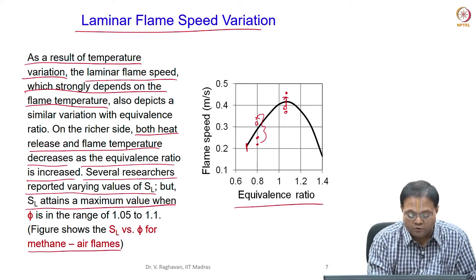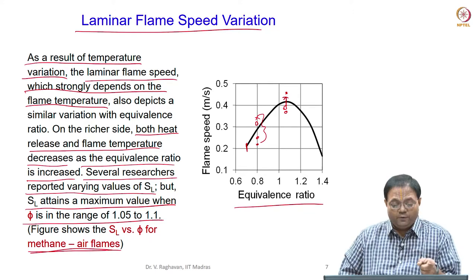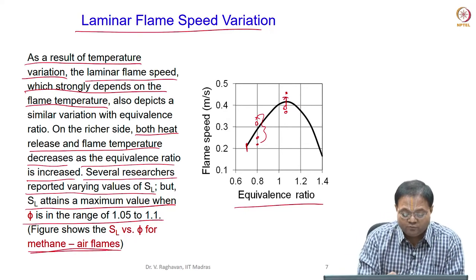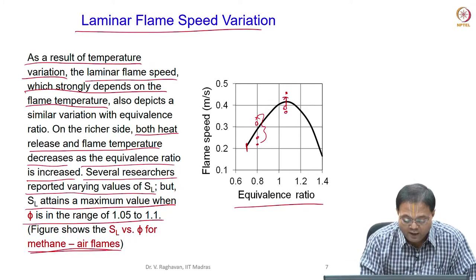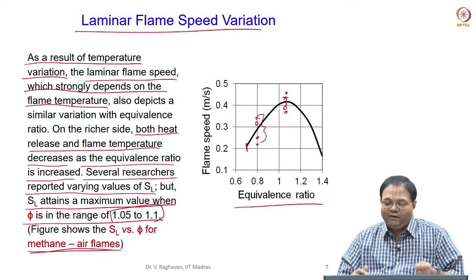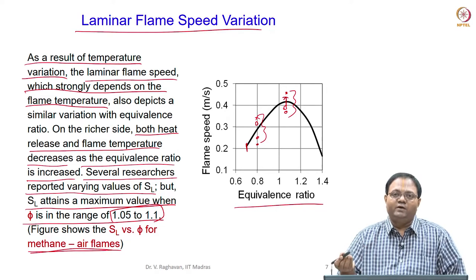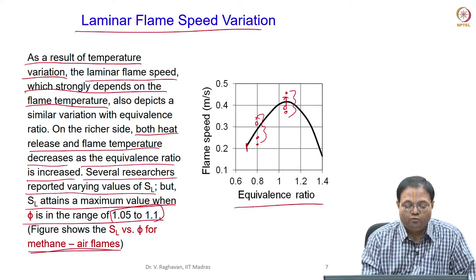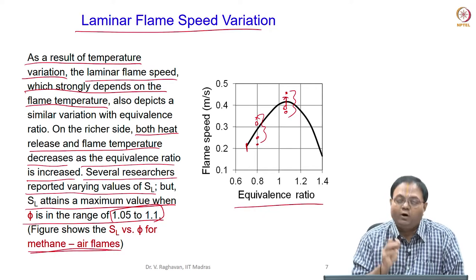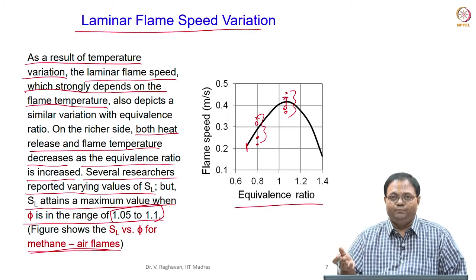The maximum value found was in the range of phi = 1.05 to 1.1 for methane-air mixture. For methane-air, several researchers — even though absolute values may vary depending on equipment — found that the maximum value of SL was attained in a slightly rich range of equivalence ratio between 1.05 and 1.1. The values themselves have some range and which is correct cannot be determined since it is configuration-based and equipment-based. But the equivalence ratio at which the maximum is attained is guaranteed. For other fuels, the phi value at which maximum flame speed is attained will vary.